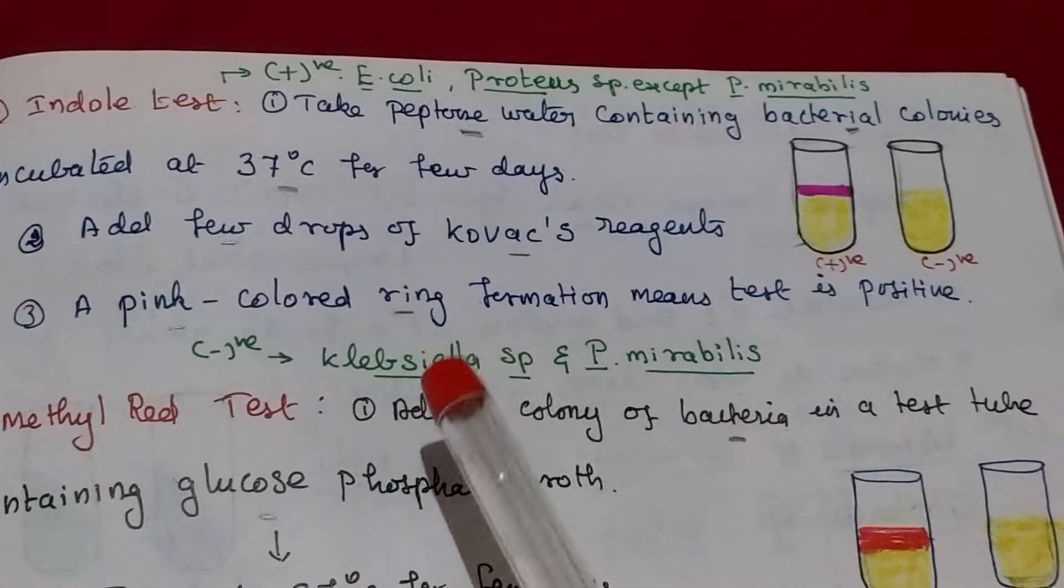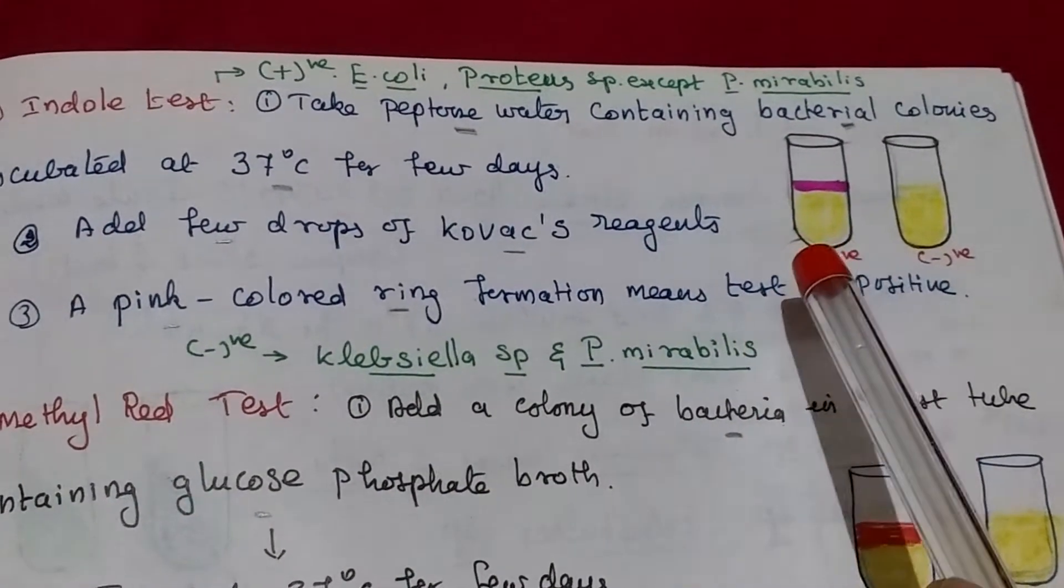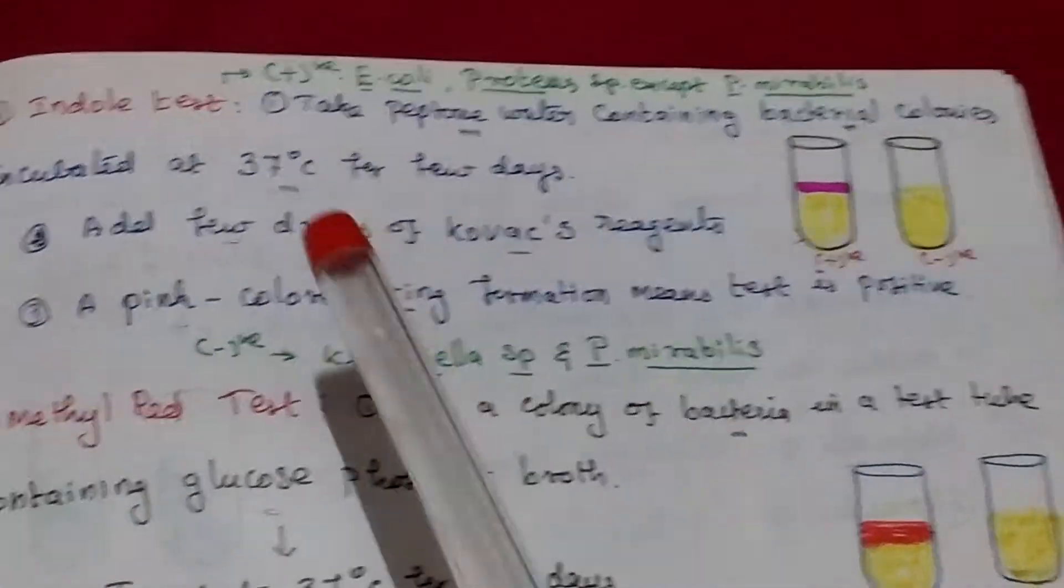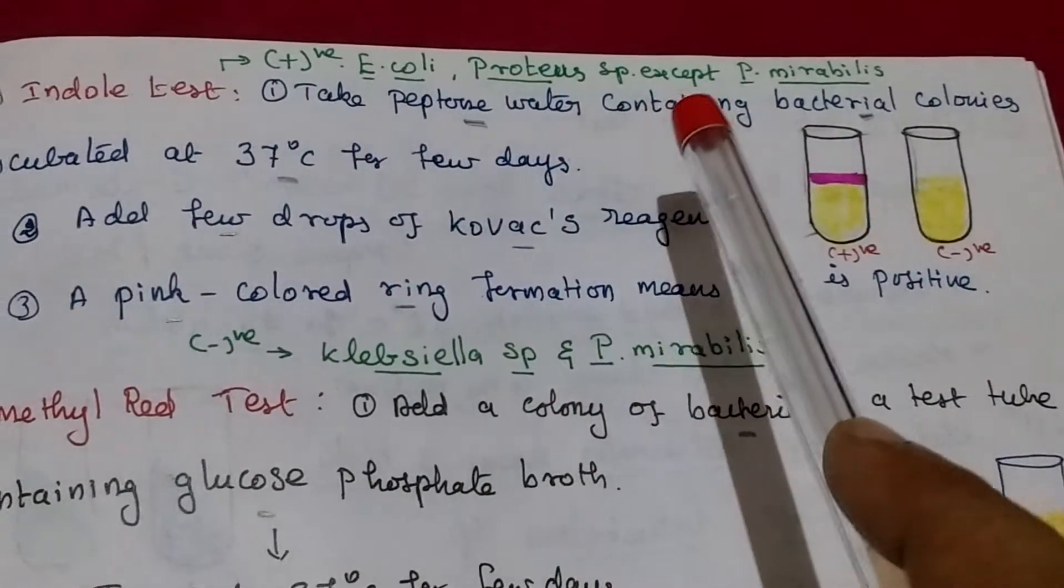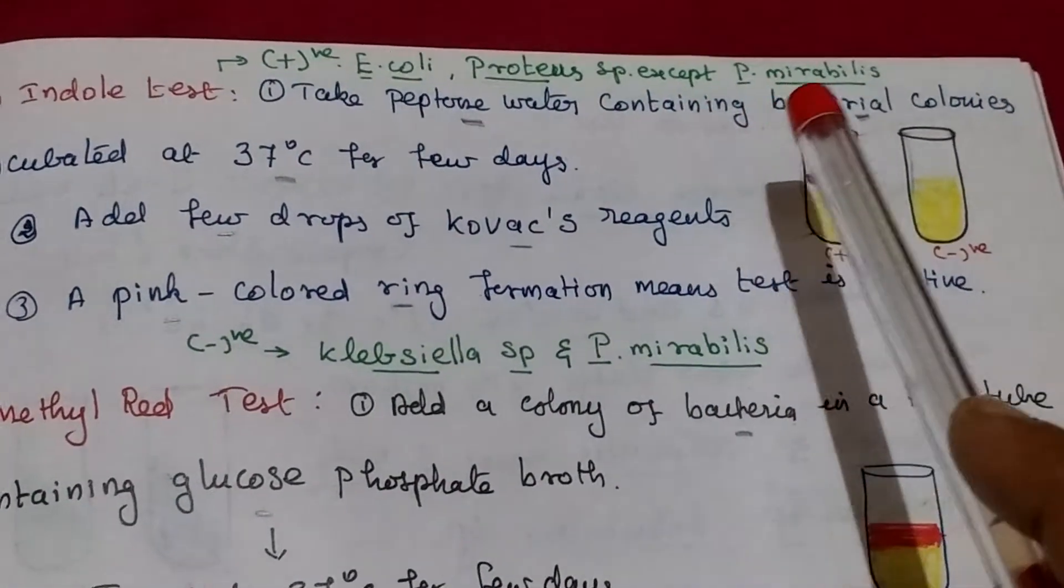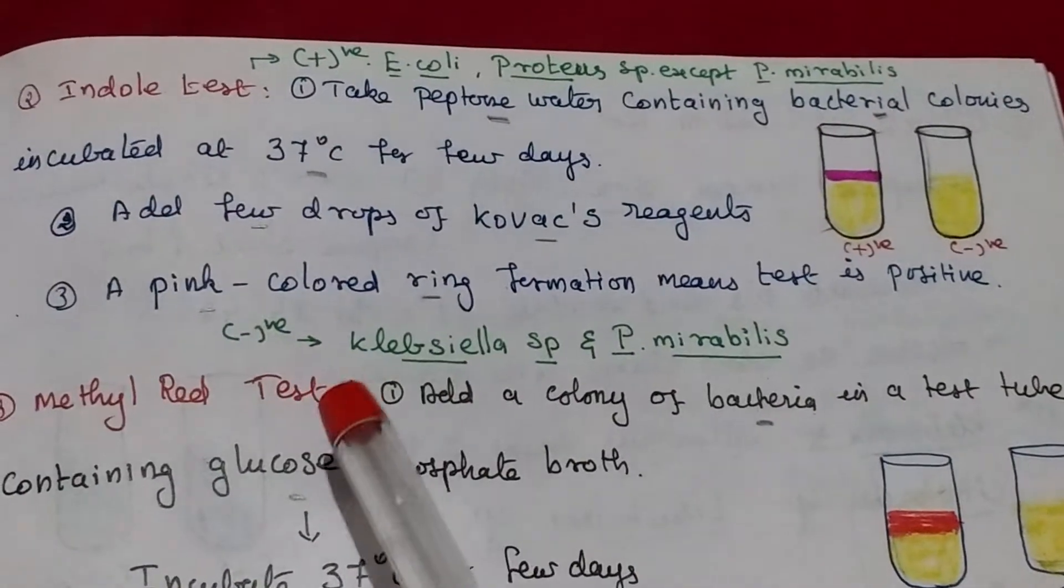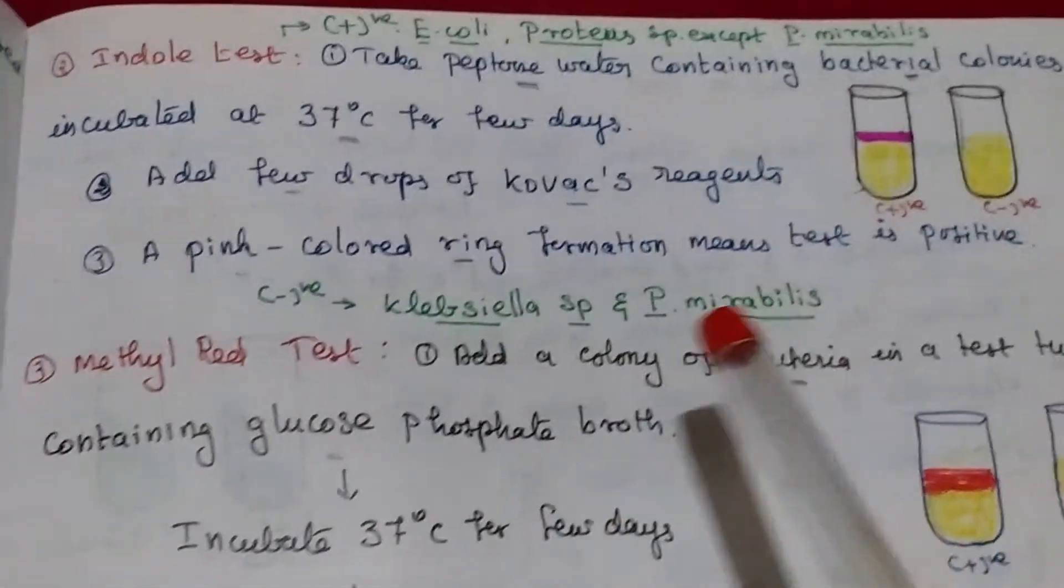Pink color ring formation means positive otherwise negative. Indole positive organism E. coli proteus except proteus mirabilis. Negative organism Klebsiella and proteus mirabilis.